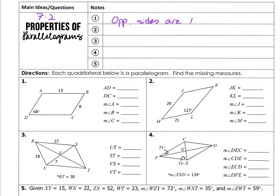We know that the opposite sides are congruent, and we know opposite angles are congruent. We also know consecutive angles, same side interior angles, are supplementary.